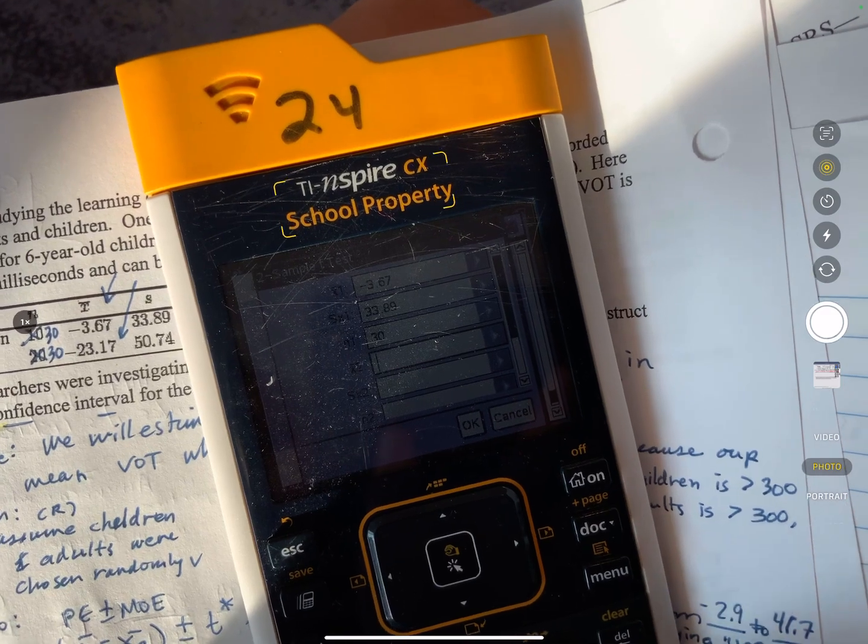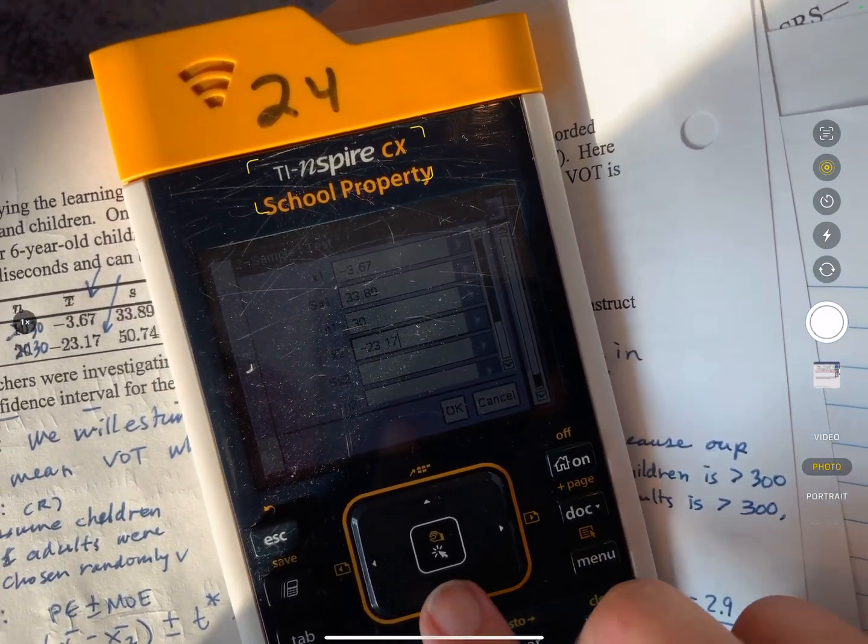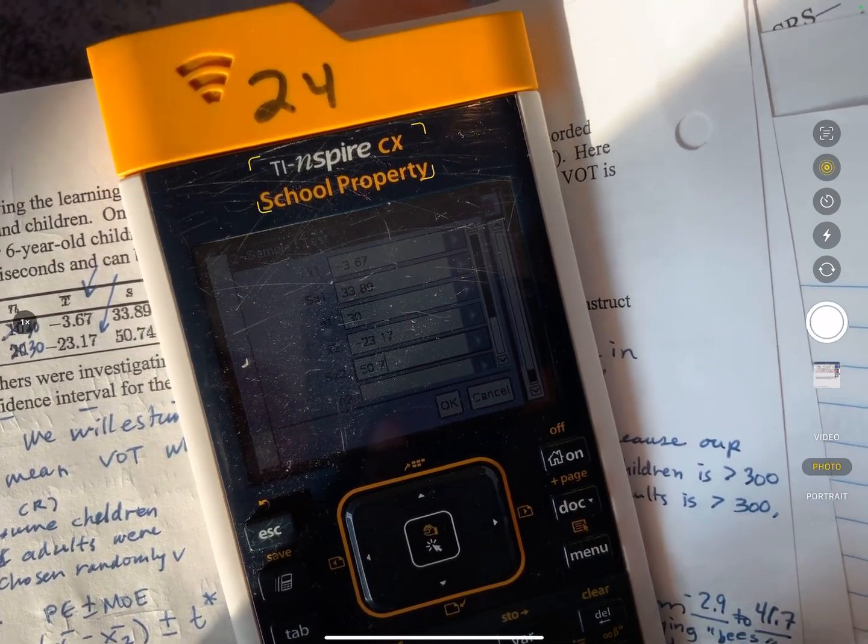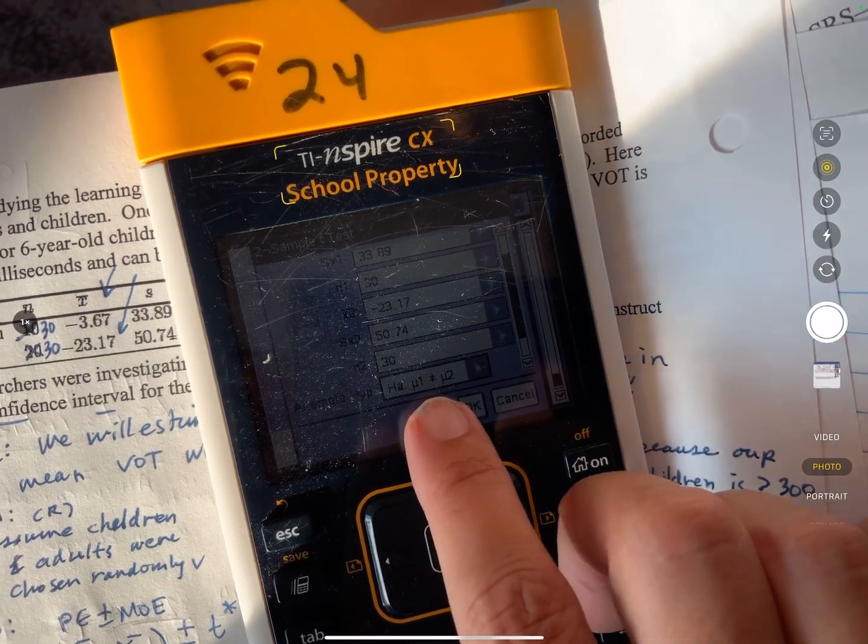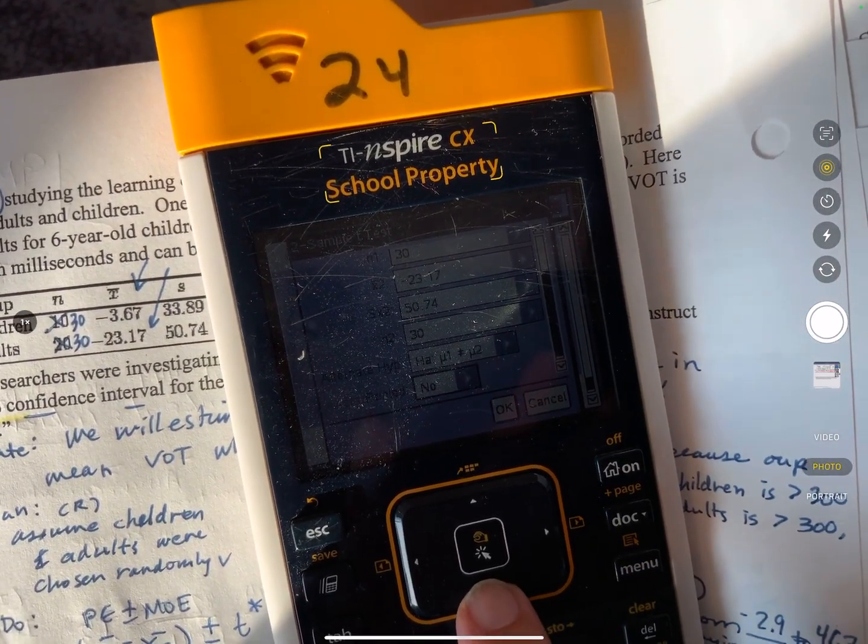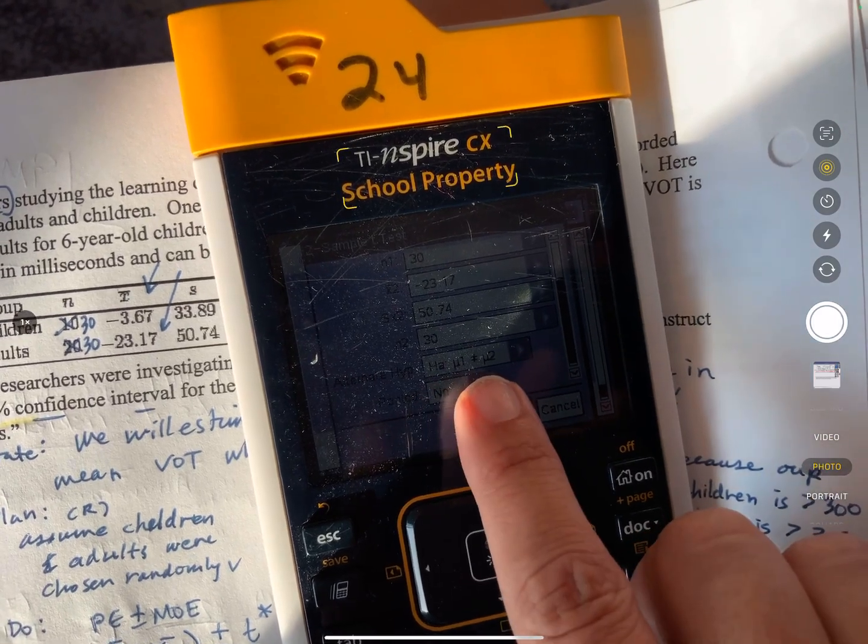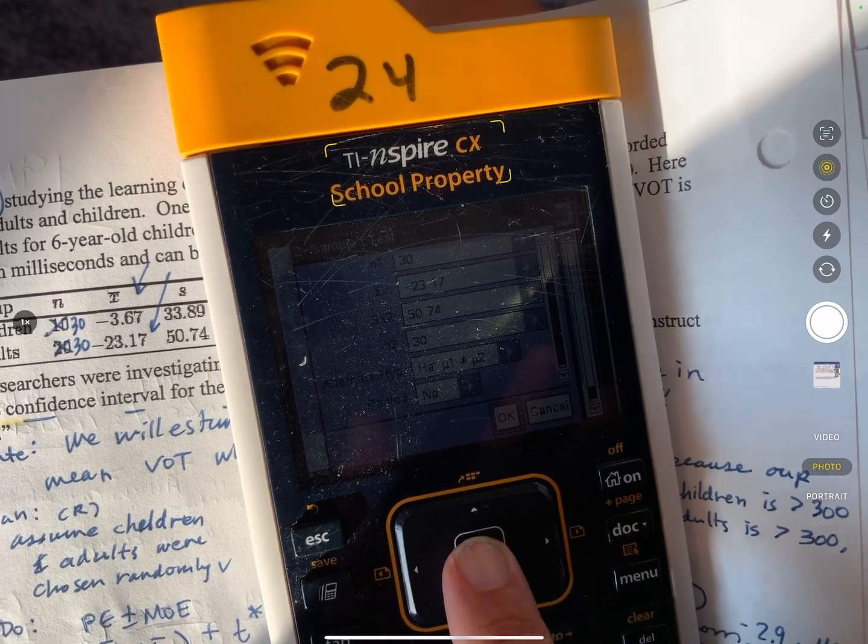And then in our second one, we have negative 23.17. Standard deviation 5074. And we talked to 30 people, right? And we want to keep this. That is consistent with our alternate hypothesis. The researcher thought there was a difference. So we leave this as not equals. So let's hit OK.